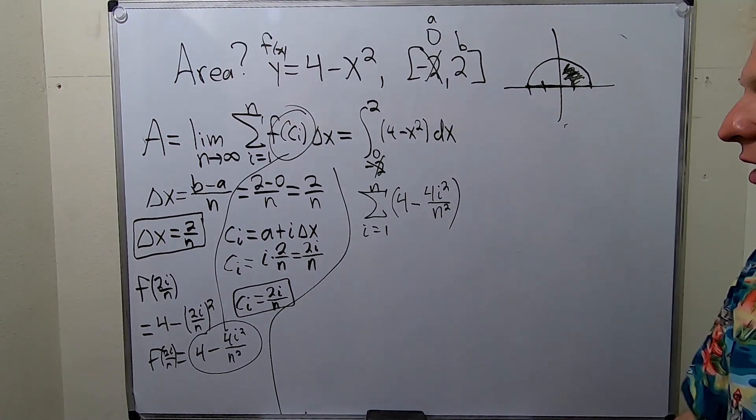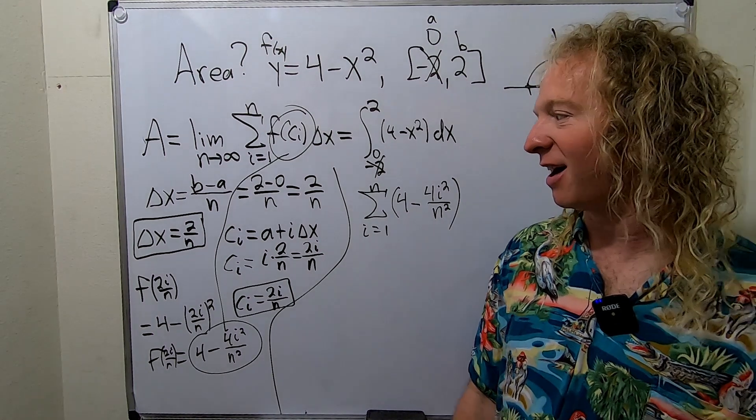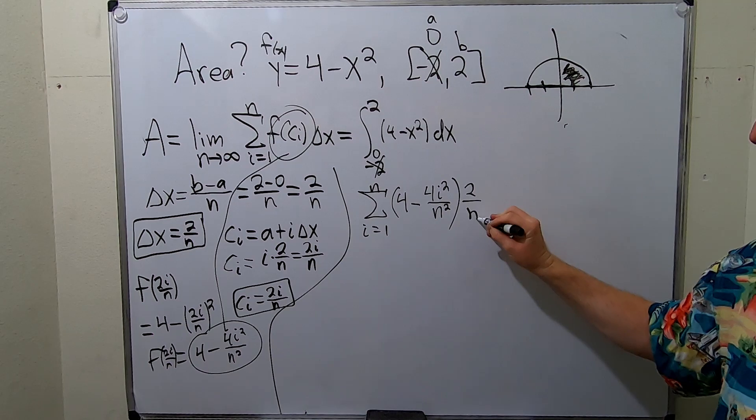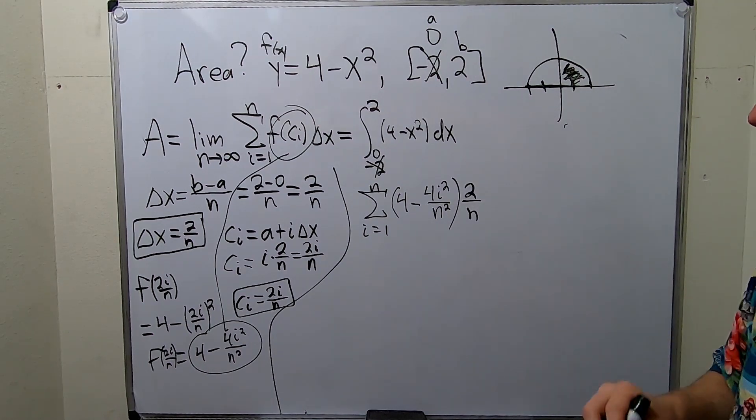And then we have our delta x. What was delta x? The power of boxes. We put it in a box. It's 2 over n. Let me pause here and just go over what we did.